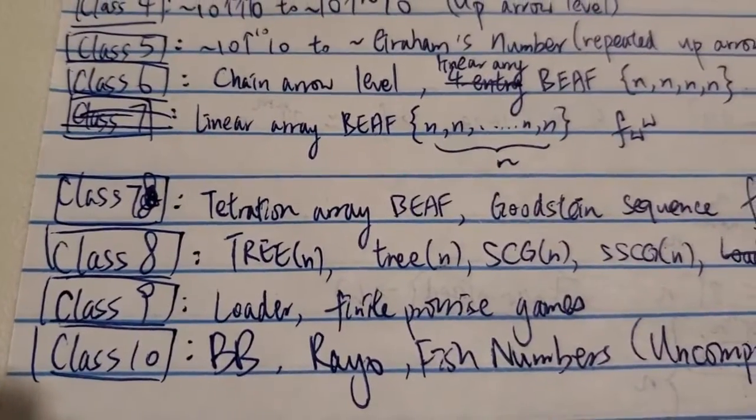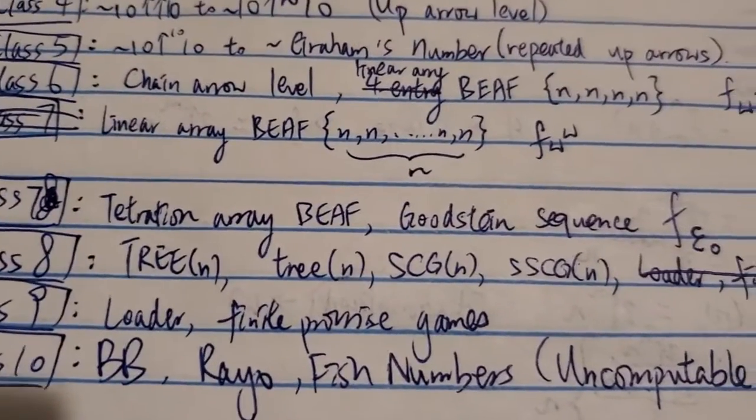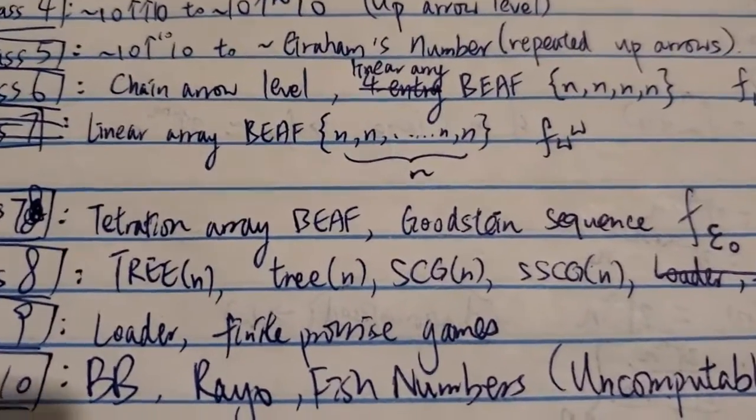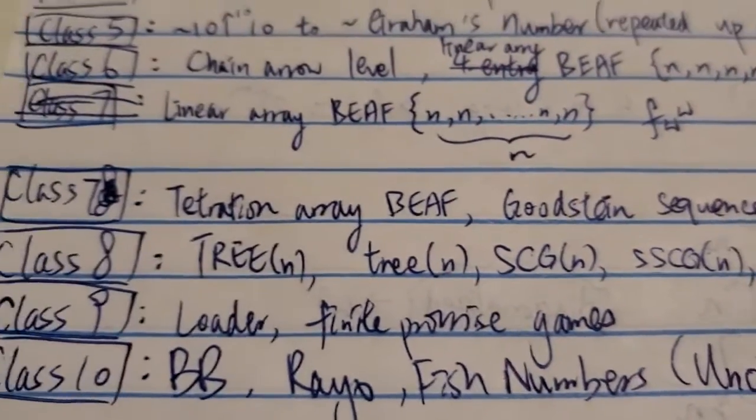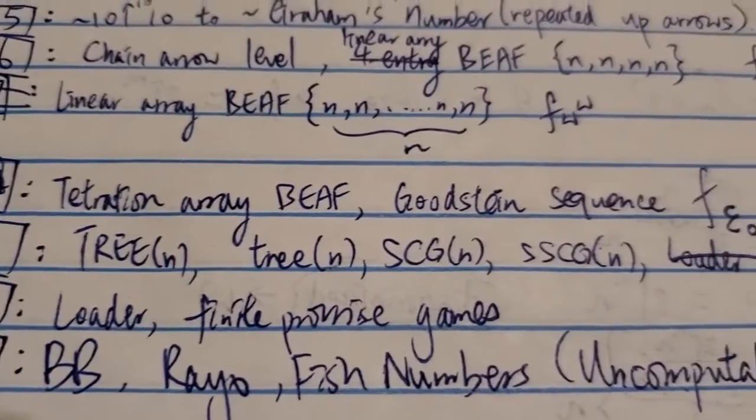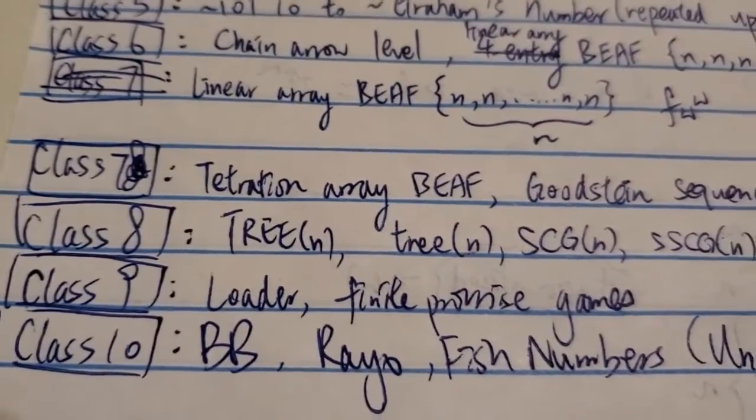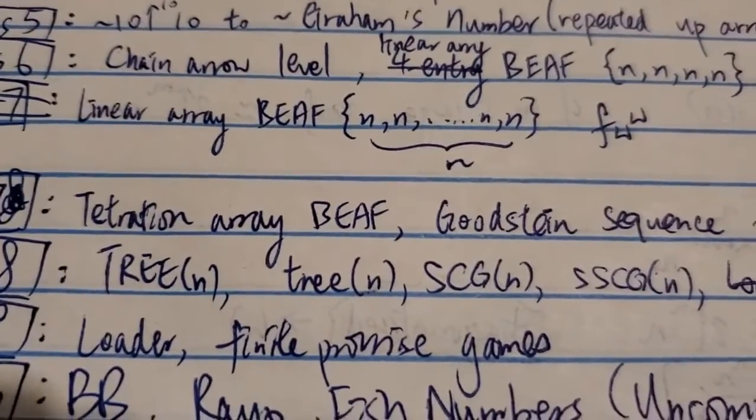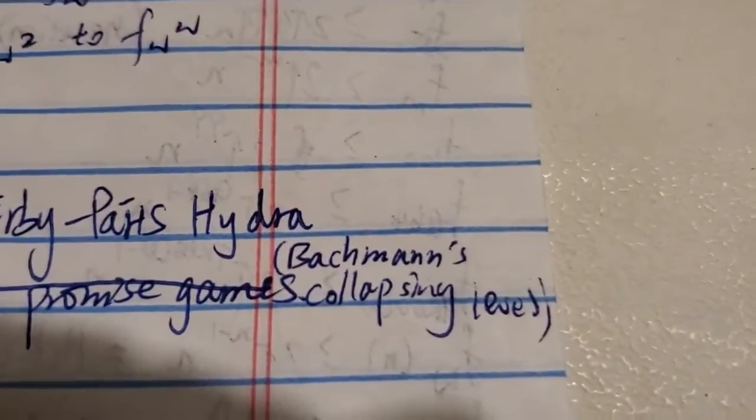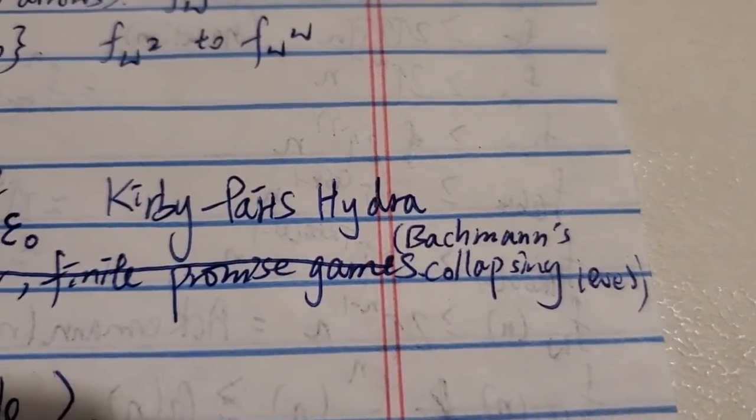Next class 8 is including the famous tree function, this big or small tree. And I also include the SCG and SSCG in here as well. Although Googleology wiki probably put the SCG function closer to class 9, I'll just group them in this case because they are similar. They're kind of related. This is also called the Bachmann's Collapsing level on Googleology wiki.